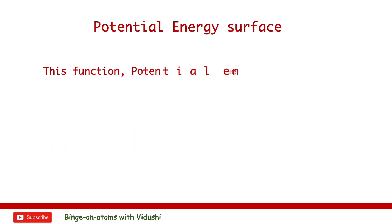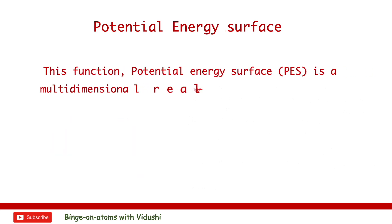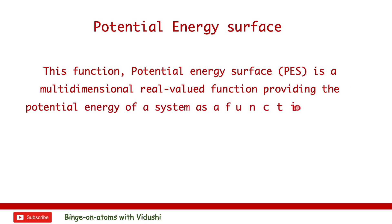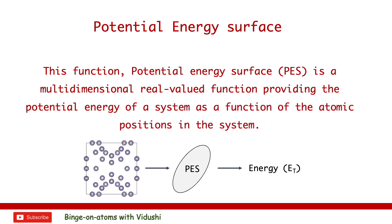The deep potential well formed at the nearest neighboring distance R0 is the binding energy between these two atoms. This representation of atomic interaction is used in atomistic computer simulations to solve problems in chemistry, physics, and material science. This function — the potential energy surface — is a multi-dimensional real-valued function providing the potential energy of a system as a function of atomic positions. Therefore, the accuracy of these potential energy functions is of high importance. Real potential energy functions are very difficult and costly to compute.